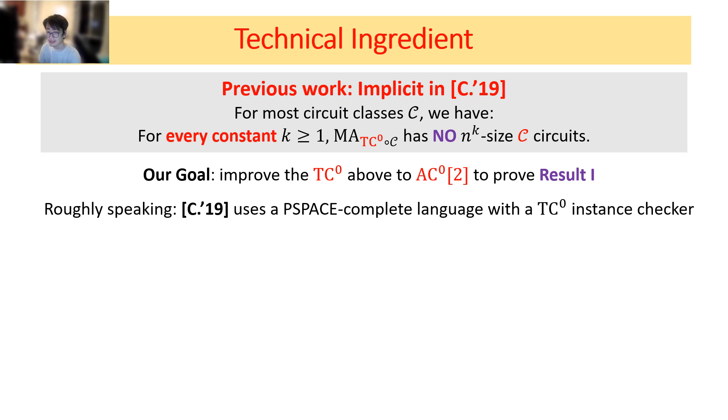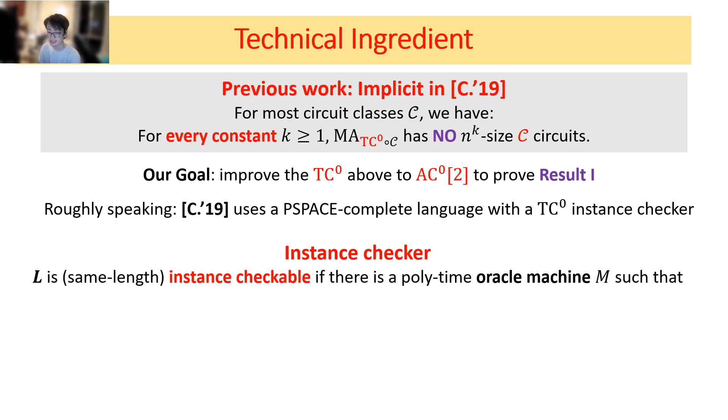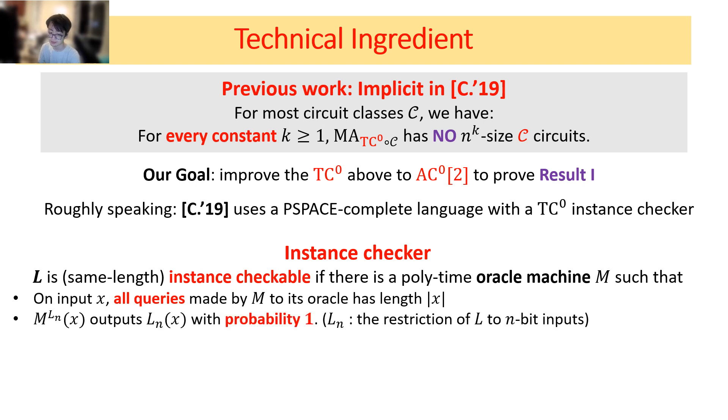Here, TC^0 is constant depth polynomial size circuits consisting entirely of majority gates. The goal here is simply to improve the TC^0 above to ACC^0[2] to prove result 1. Why did the previous work have to use TC^0 in the MA verifier? Roughly speaking, the previous work uses a PSPACE-complete language with TC^0 instance checker. What is an instance checker?